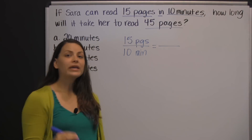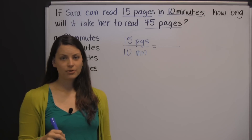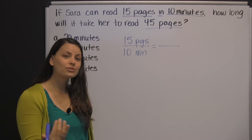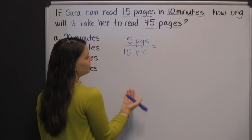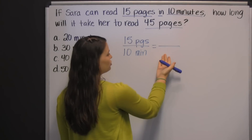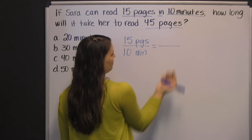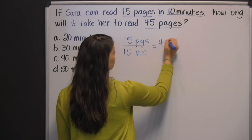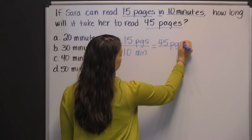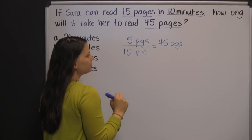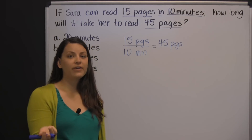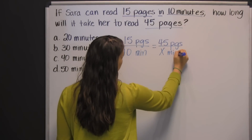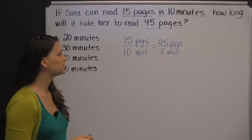What's really important about setting up proportions is that you're consistent. So if your first ratio is pages to minutes, then your second ratio should also be pages to minutes, which tells us to put the 45 pages on top of our fraction, in our numerator. So what we're trying to find is how many minutes it's going to take to read those 45 pages.